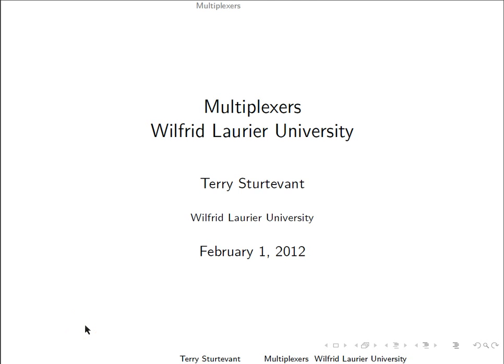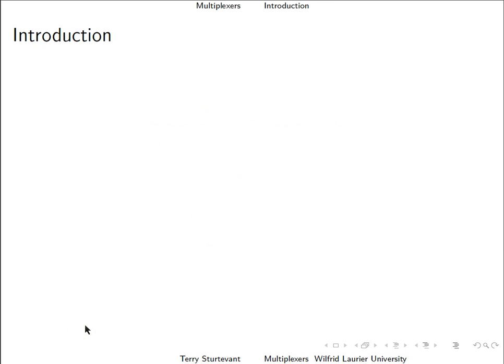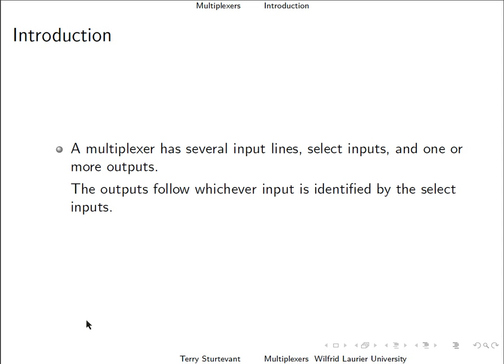This is an introduction to multiplexers. A multiplexer has several input lines, select inputs, and one or more outputs. The output follows whichever input is identified by the select inputs.